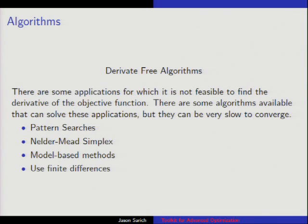There are some cases where we don't have derivative information at all. There are different ways to solve it if you don't know any derivatives: one is to do a pattern search where you just take a sampling of places. There are other algorithms like genetic algorithms, simulated annealing, and ant swarm. There's also a Nelder-Mead simplex, which we have in TAO. It's also possible to use finite differences if you don't have any gradients, but we really don't recommend that because if you have more than ten variables, it's going to take forever.